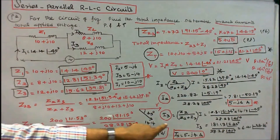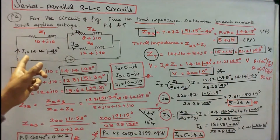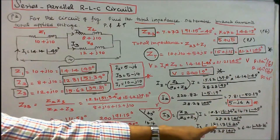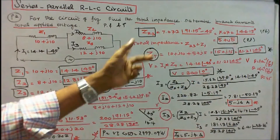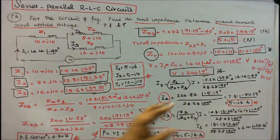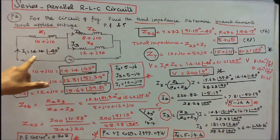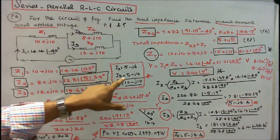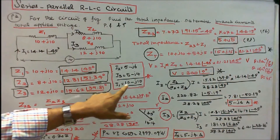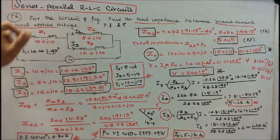Similarly, I3 = [Z2 / (Z2 + Z3)] × total current I = 6.41∠−38.66° in polar form, or 5 − j4 amps in rectangular form. According to Kirchhoff's law, I2 + I3 = I1. I2 = 5 − j6, I3 = 5 − j4, therefore I1 = 10 − j10, with angle −45 degrees. This confirms our result.